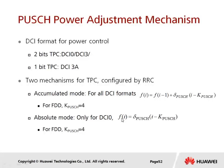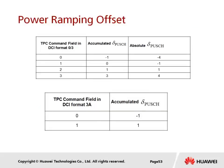In absolute mode, FI does not consider the previous adjustment F(i minus 1) — only the current adjustment sent 4 subframes earlier is considered. Once the UE receives the TPC value, it applies either accumulated or absolute mode. Different TPC values indicate different power adjustments: for accumulated mode, the adjustment range is from minus 1 to plus 3 dB; for absolute mode, it ranges from minus 4 to plus 4 dB. For DCI format 3A, only one bit is used for TPC and this is only applicable for accumulated mode.